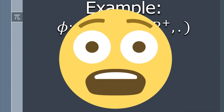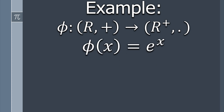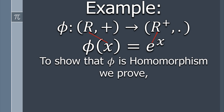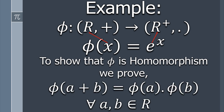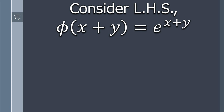Now let's discuss another example. Let φ be a function defined from the group of real numbers under addition to the group of positive real numbers under multiplication, where φ(x) = eˣ. To show that φ is a homomorphism, we prove that φ(x + y) = φ(x) × φ(y) for all elements of ℝ.